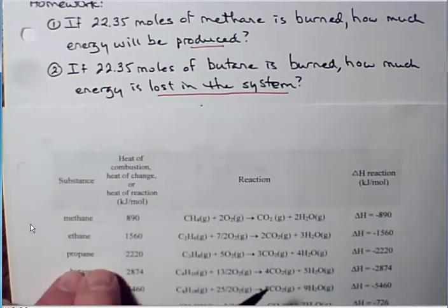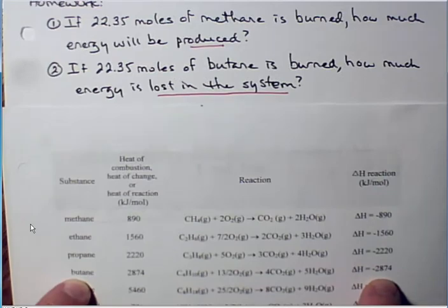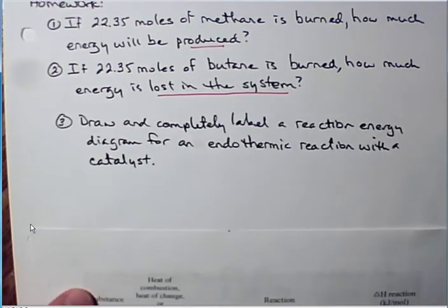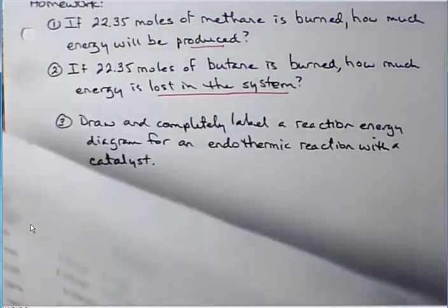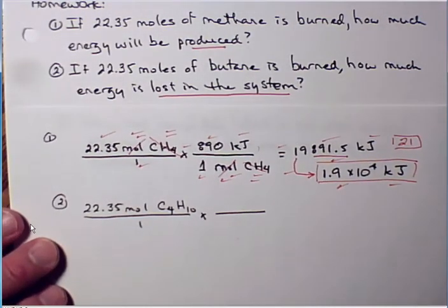Then we're going to go over here, we're going to look for the amount of energy change in the system, because delta H is always what's happening in the system. So this time we're going to have a negative number. So that's a negative 2874.